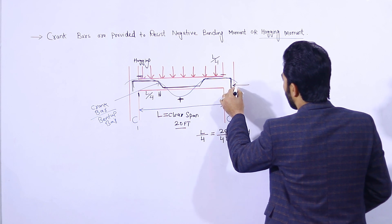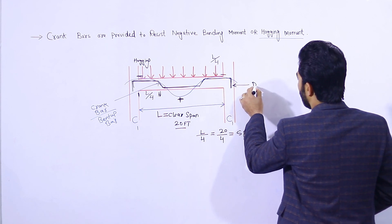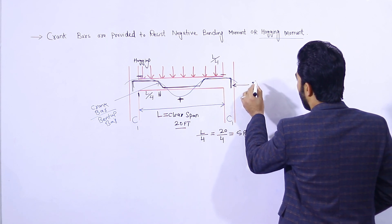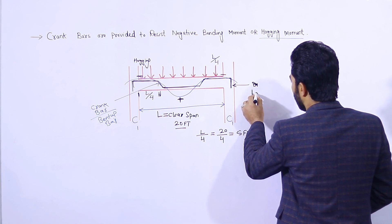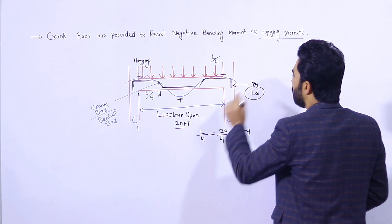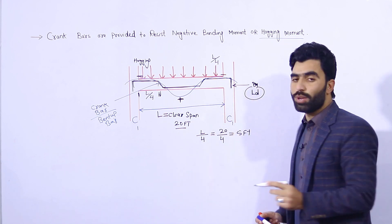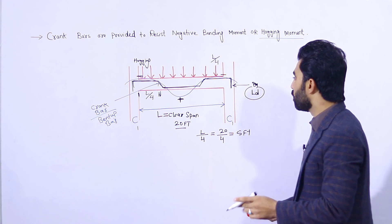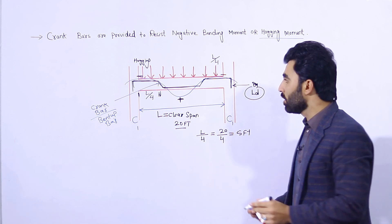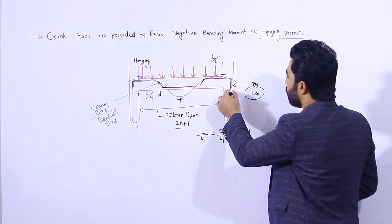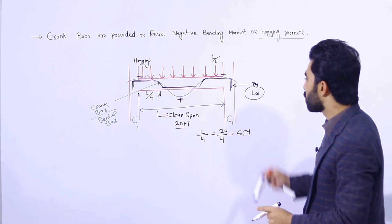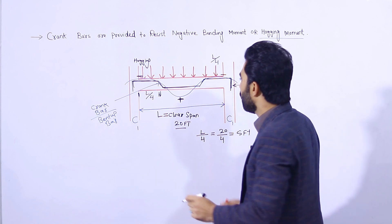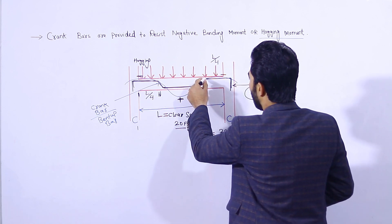Here you can see this steel rod — this is called development length, written as L_d. Development length creates a good bond between steel and concrete. Therefore we provide development length to join the steel reinforcement with the column reinforcement, so it will be strong.